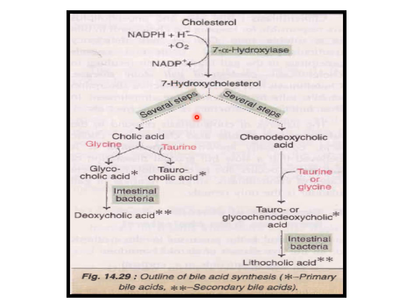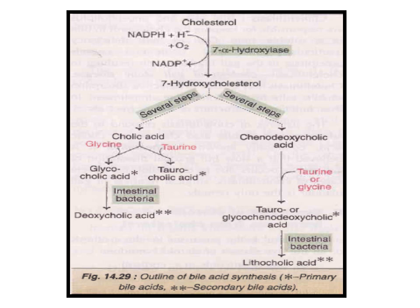This is the outline of bile synthesis. It starts from cholesterol, using NADPH and under the influence of 7-alpha-hydroxylase enzyme, it is converted into 7-hydroxycholesterol. Through several steps, 7-hydroxycholesterol is converted into cholic acid. Cholic acid using glycine is converted into glycocholic acid, and using taurine it is converted into taurocholic acid. Under intestinal bacteria action, it is converted into deoxycholic acid.